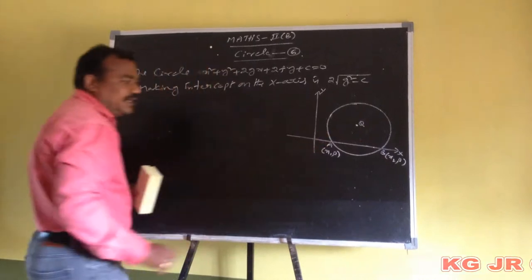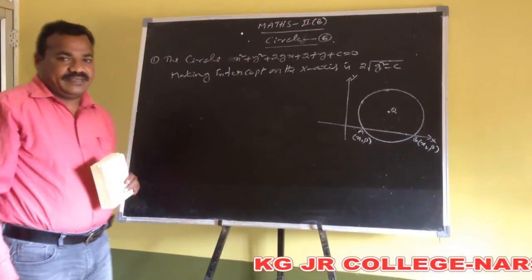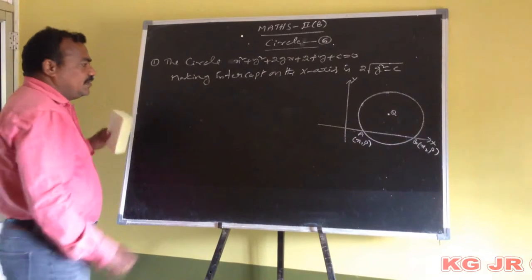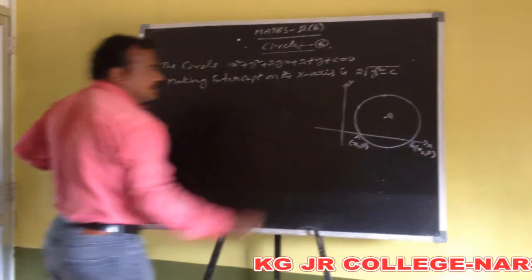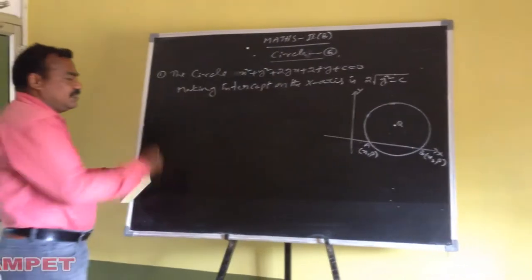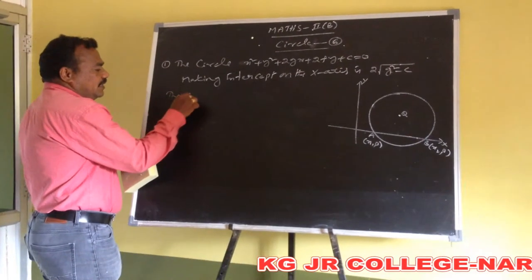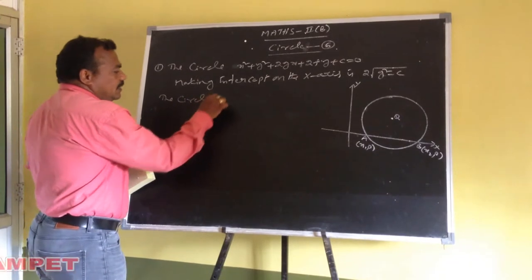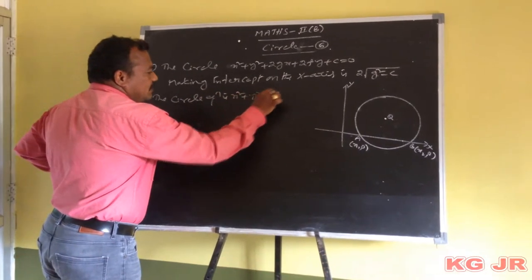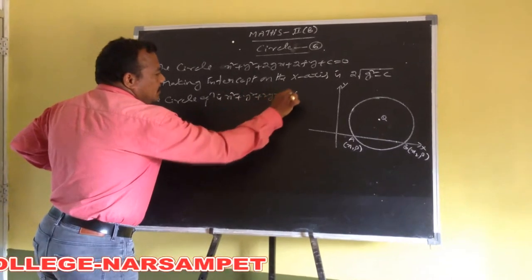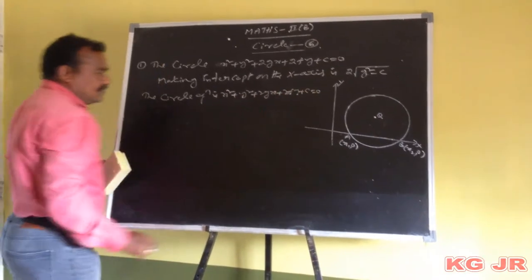The distance between a and b is the intercept the circle makes on the x-axis. We are doing this intercept: 2 into root of g square minus c. The circle equation is x square plus y square plus 2gx plus 2fy plus c is equal to 0.